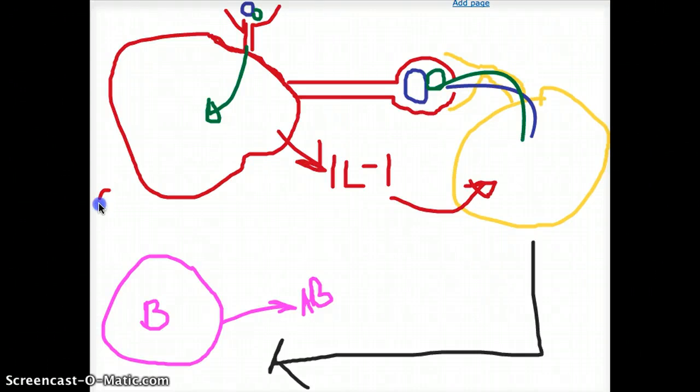Imagine this is our hapten without any immunogen. This hapten is going to be picked up by the macrophages, digested, and passed on to the system. It trickles down the system, and the B-cells will eventually make antibodies for that hapten.